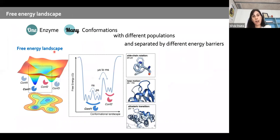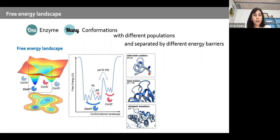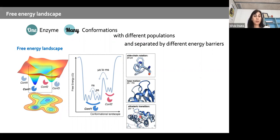The idea of the enzyme as not a single conformation but rather an ensemble is nicely represented by the free energy landscape concept. In a model landscape, conformation one may be most stable, followed by conformation two, and transitions between them are faster or slower depending on the energy barrier. Side chain rotations are typically picoseconds, loop motions relevant to enzyme function can be microseconds, and allosteric transitions can take quite long.